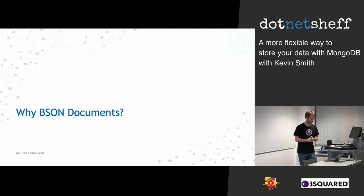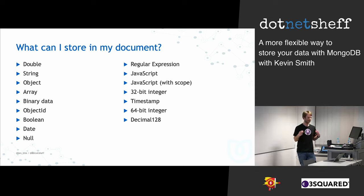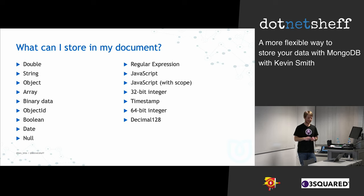So we know it's a document database based on BSON. Why do we have BSON documents? You can store lots of different things inside them — doubles, strings, objects, arrays, binary blobs, object IDs, and more. This gives us the ability to query in lots of different ways: range queries, intersections, looking inside objects or arrays, checking the size of arrays, and lots of other things.